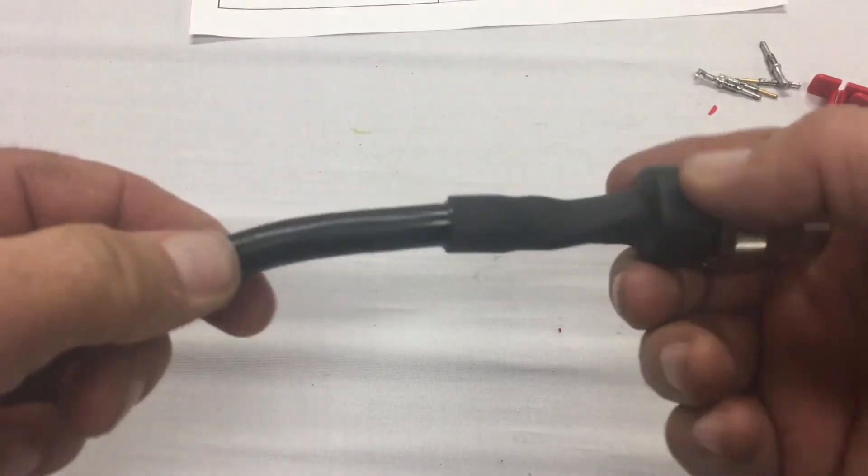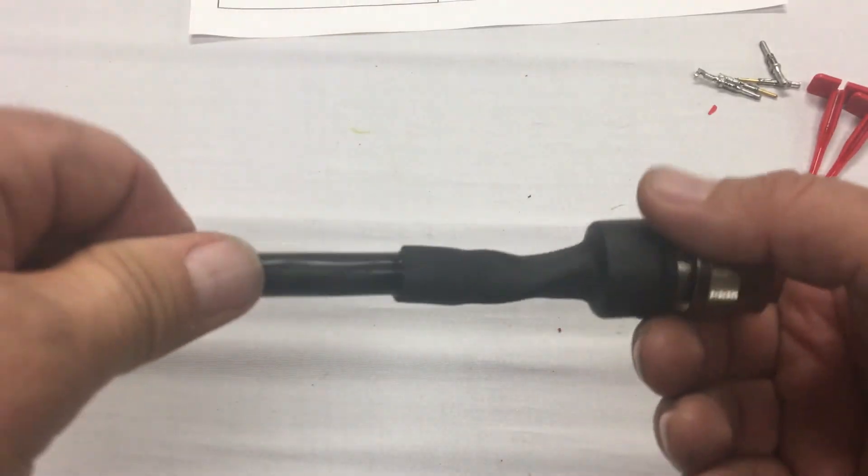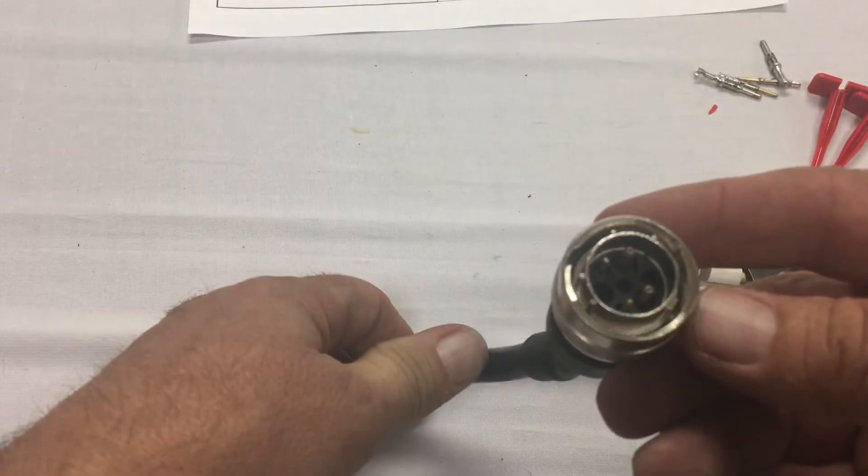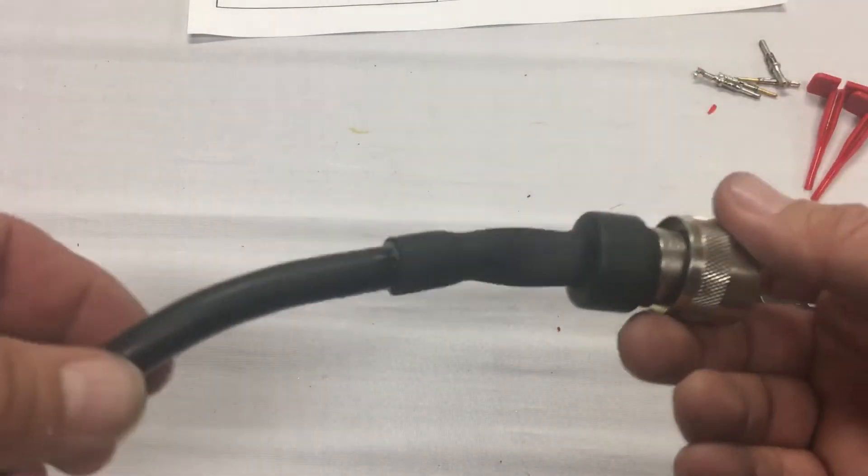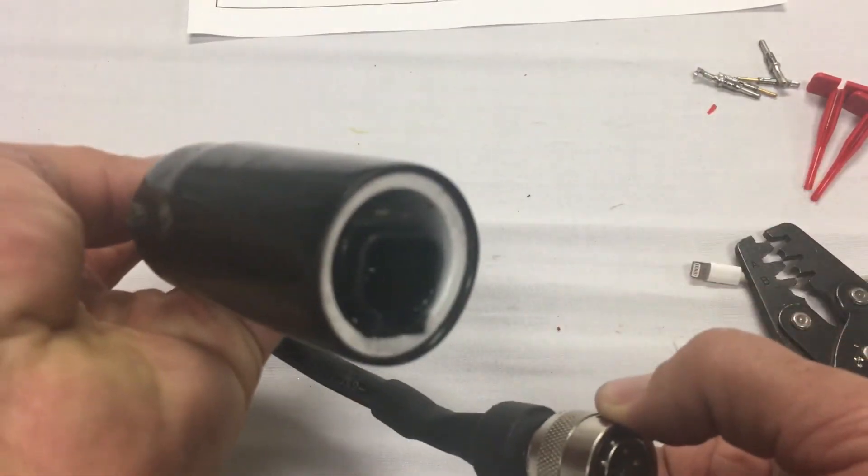And here's what it looks like when it's all finished. I just got back from doing the shrink tubing at my bench. There's your pins - you've got your CAN high, your CAN low, the plus and your minus. It's all back and ready to go back into service.